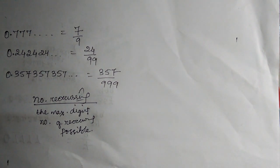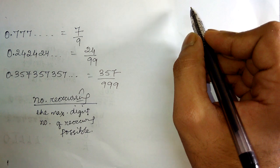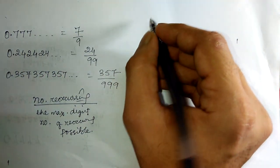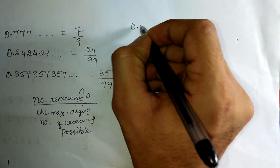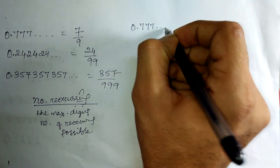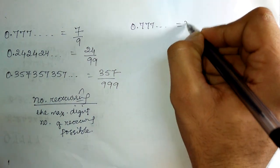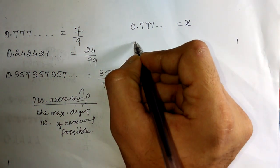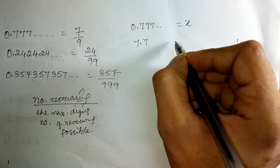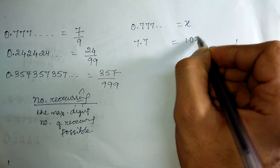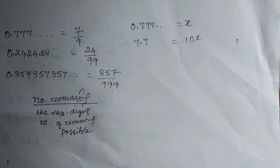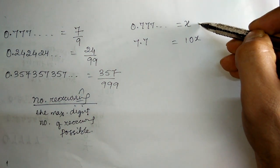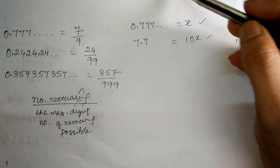Let us take the first example: 0.777 and so on. Let this number be x. What we have to do is multiply both sides by 10, then it becomes 7.777... and this becomes 10x.